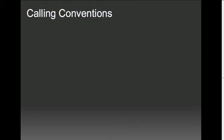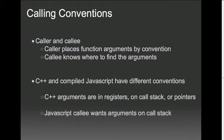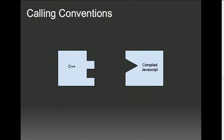IonMonkey is written in C++, so how do you call a compiled JavaScript function from C++? Well, we take advantage of calling conventions. Calling conventions is an agreement between a caller of a function and the function itself. The caller places function arguments by a certain convention, and then the callee knows exactly where to find the arguments, because it is assuming that the caller is using a particular calling convention. C++ and our compiled JavaScript have different conventions. C++ arguments are in registers on the call stack, or maybe passed by pointers. JavaScript callee wants all arguments as values on the call stack in the right order, and has some other requirements as well.